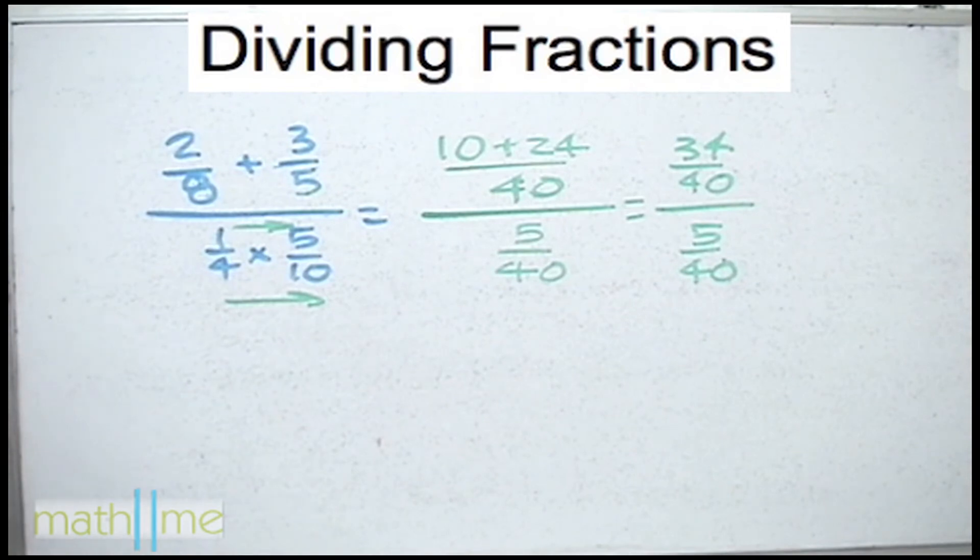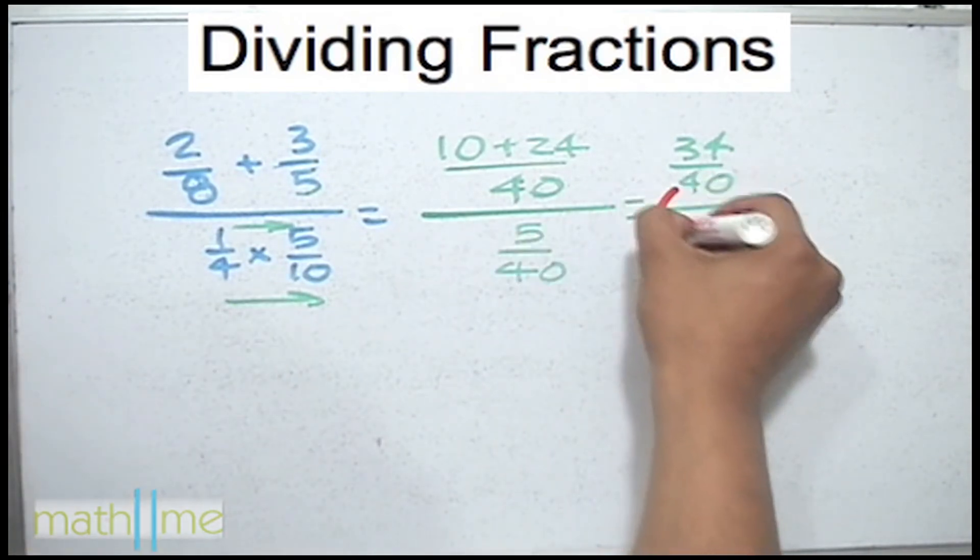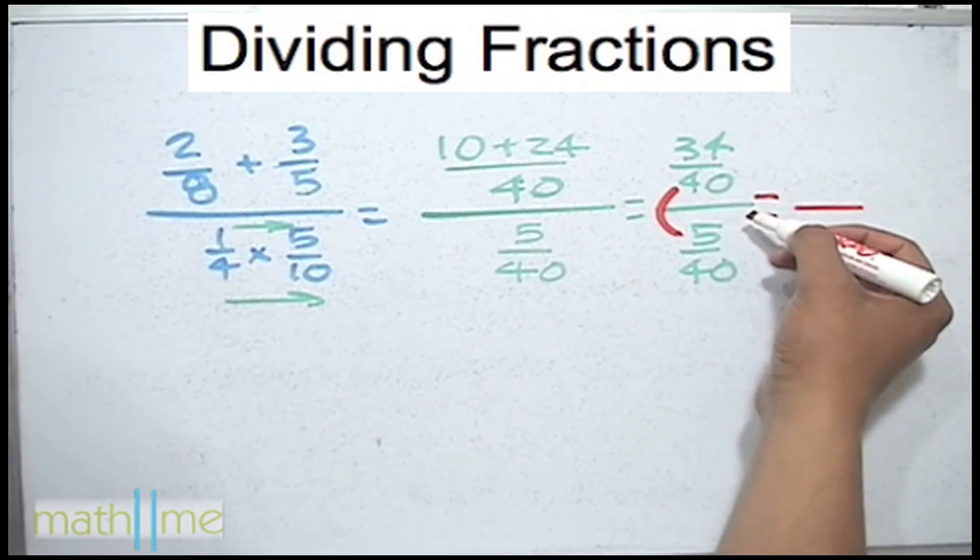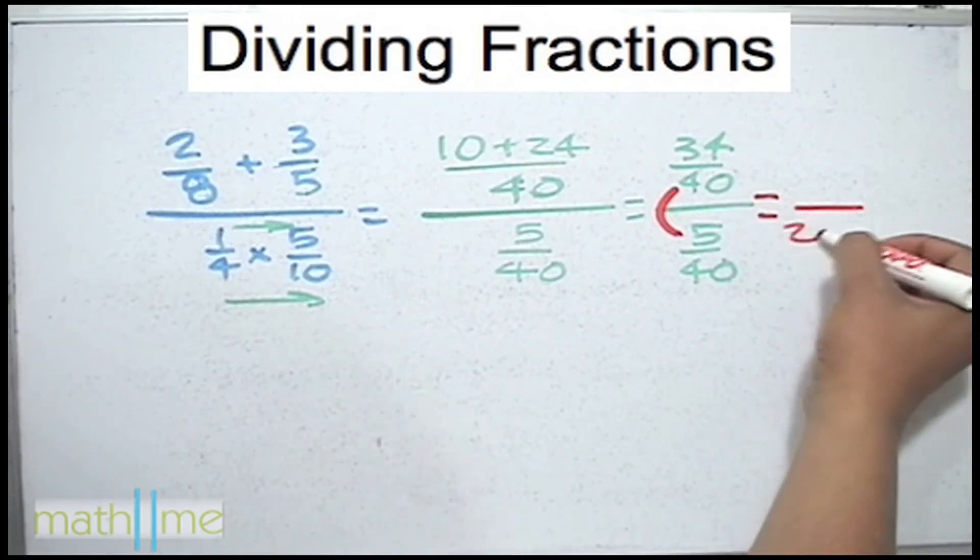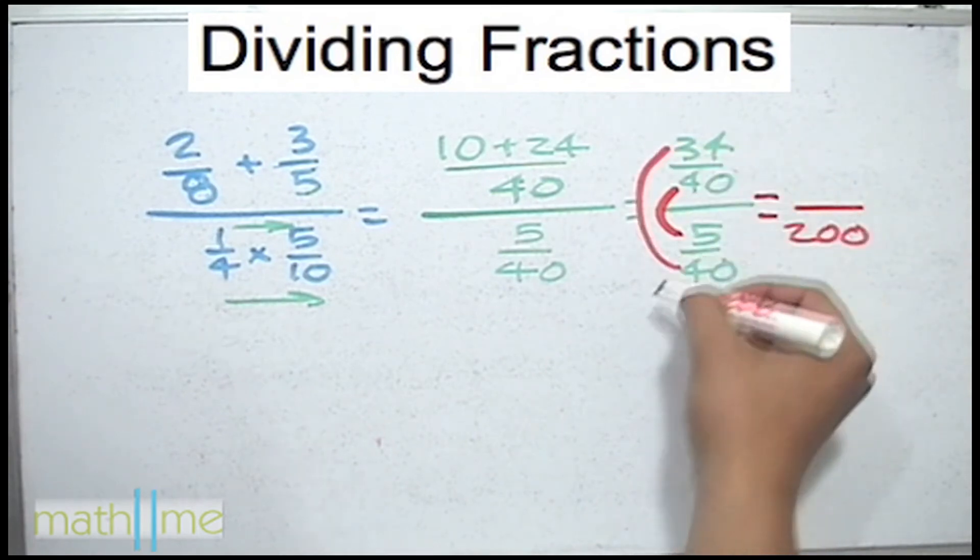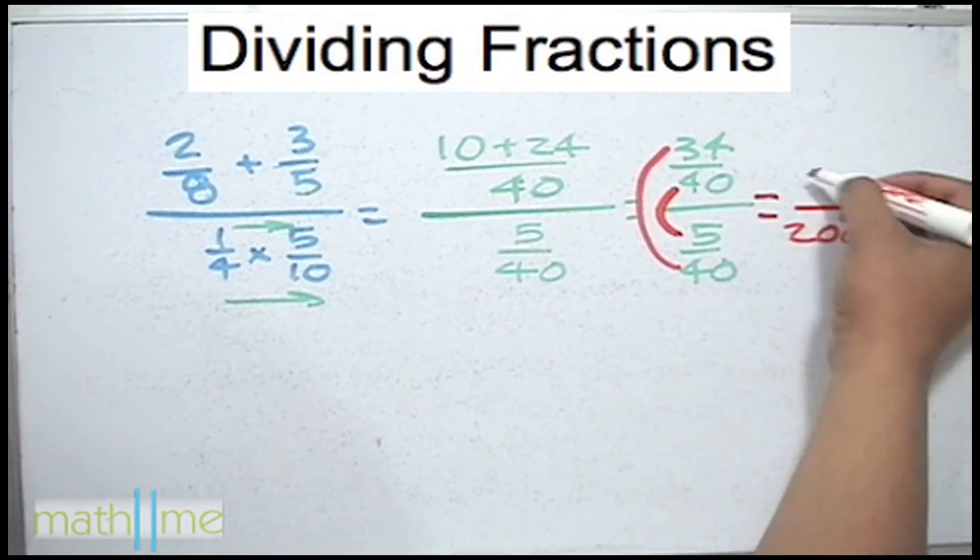Then as we said we were going to multiply 40 times 5 and the result put it down so here will be 200. And if we multiply 34 times 40 it goes up, that is 1360.